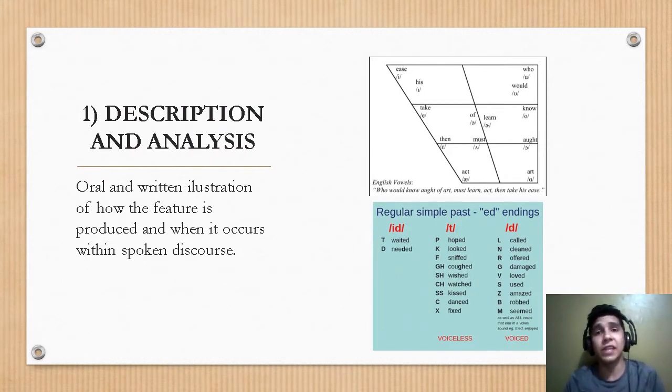Let's start with the first stage of this framework, which is description and analysis. This is about oral and written illustration of how the feature is produced and when it occurs within spoken discourse. In this part, the teacher presents a feature and the rules of occurrence either inductively or deductively. What does this mean? We can use all the materials available like charts, guides, and other things.